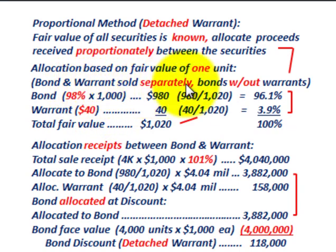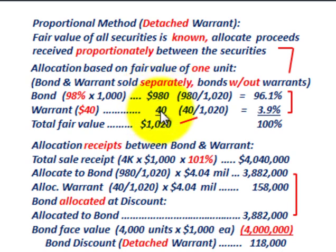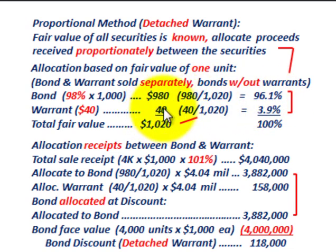The bond sells at 98% without the warrant, so at $1,000 face value that gives us $980 per bond. The warrant has a market price of $40 each. So the total fair value of one unit is $980 plus $40 equals $1,020. We allocate to the bond $980 divided by $1,020, which is 96.1%, and to the warrant $40 divided by $1,020, which is 3.9%.